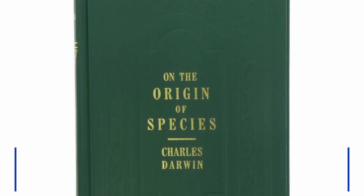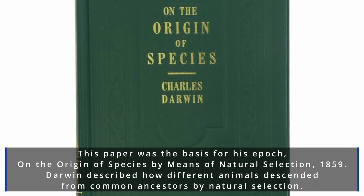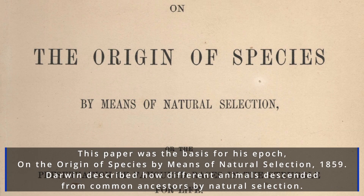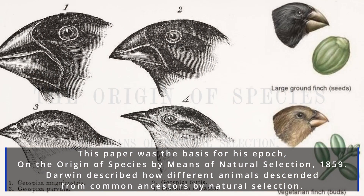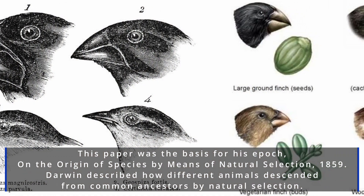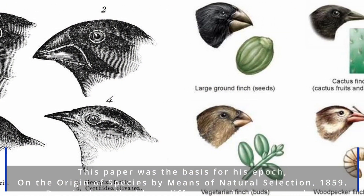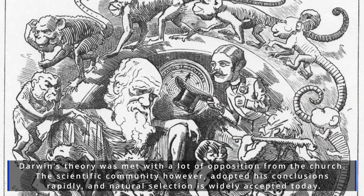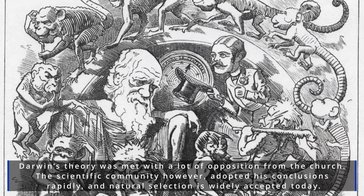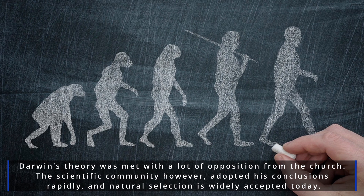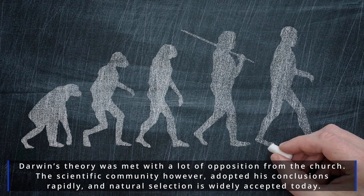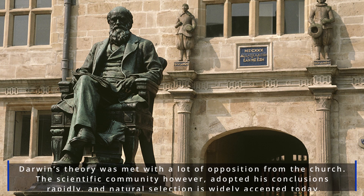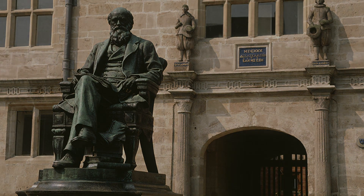This paper was the basis for his epoch, On the Origin of Species by Means of Natural Selection. Darwin described how different animals descended from common ancestors by natural selection. Darwin's theory was met with a lot of opposition from the Church, but the scientific community adopted his conclusions rapidly, and natural selection is widely accepted today.